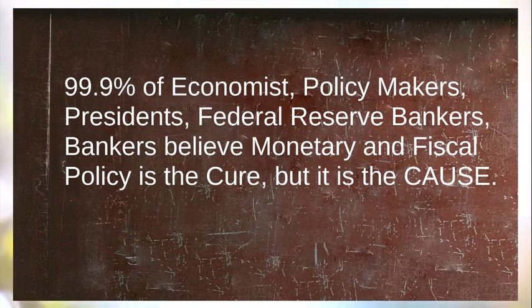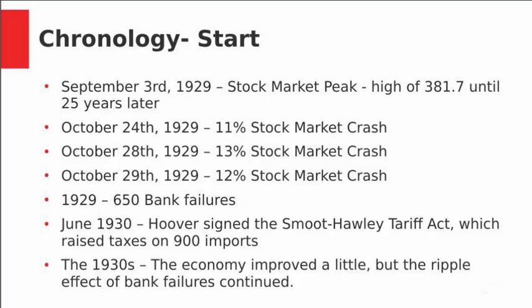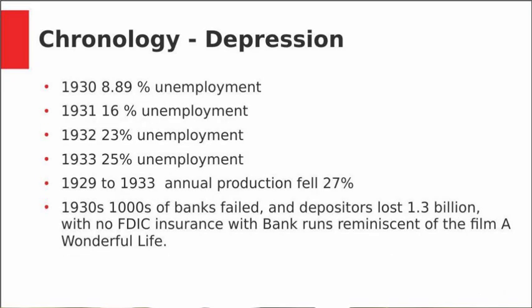The chronology of the Great Depression: September 3rd, 1929, the stock market peaked, and it wasn't until 25 years later that it returned to that level. In October the stock market crashed. 1929 saw 650 bank failures. 1930, Hoover signed the Smoot-Hawley tariff, which raised taxes. The economy improved a little bit in the early 1930s, but there was a ripple effect from the bank failures, with a progressive increase in unemployment while industrial production continued to fall and bank failures continued.